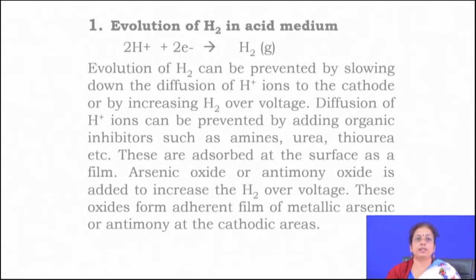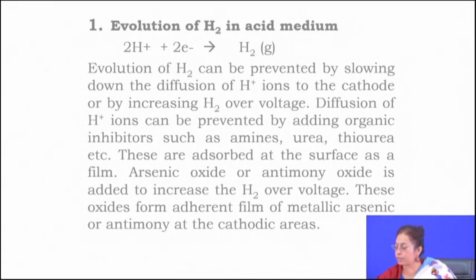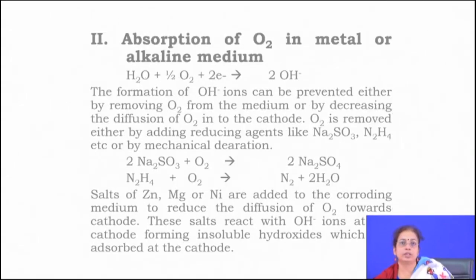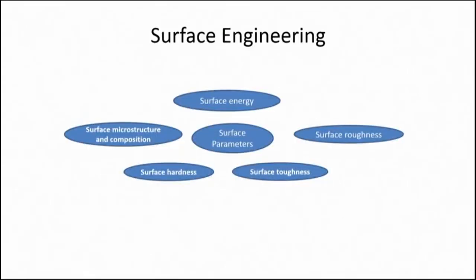Hydrogen evolution in the media can be prevented by slowing down diffusion of hydrogen ions to the cathode or by decreasing hydrogen overvoltage. Diffusion of hydrogen ions can be prevented by adding organic inhibitors such as amines, urea, and thiourea, which are adsorbed at the surface as a film. Arsenic oxide or antimony oxide is added to increase hydrogen overvoltage, forming an adherent film of arsenic or antimony metal at cathodic sites. Absorption of oxygen can be addressed by sodium sulphite, which consumes oxygen from the system so no more free oxygen is available and the component is protected.